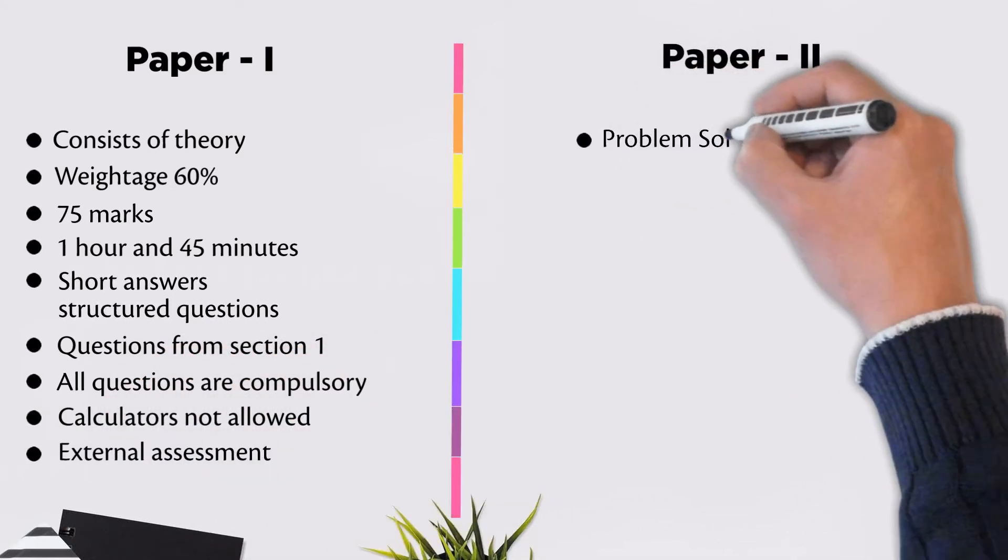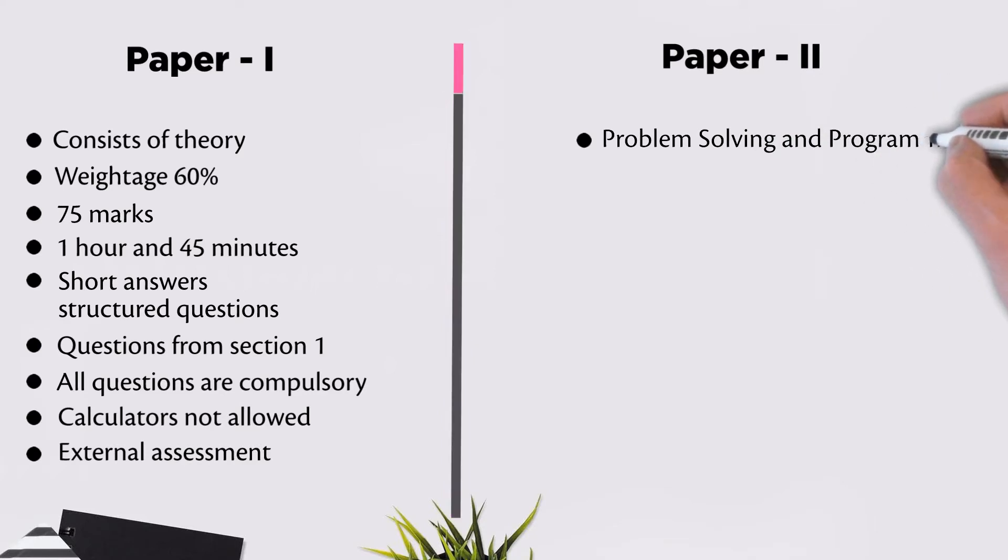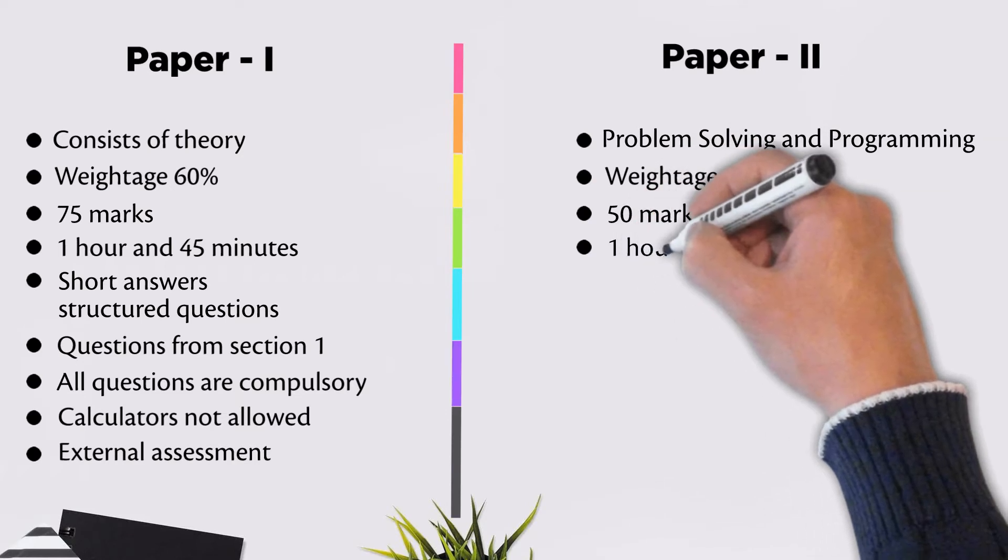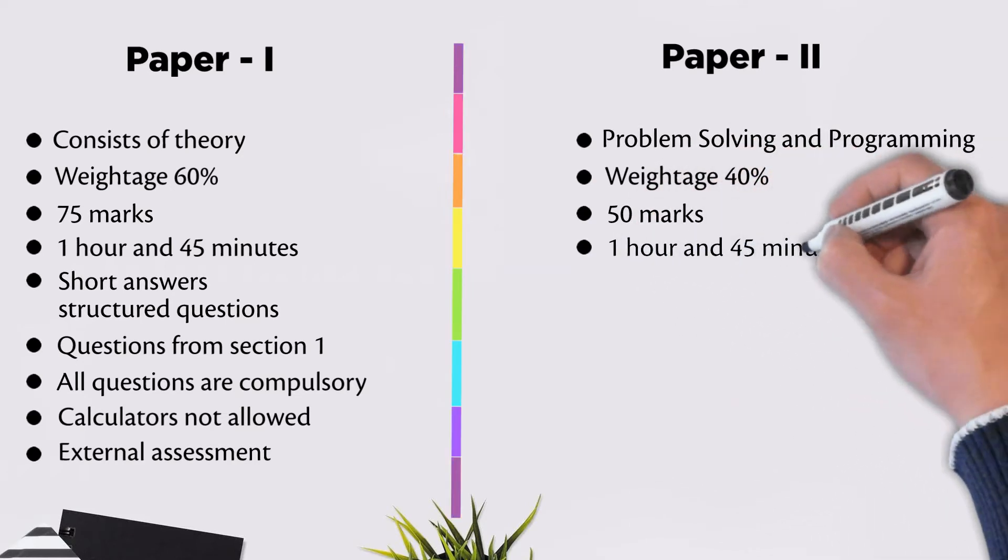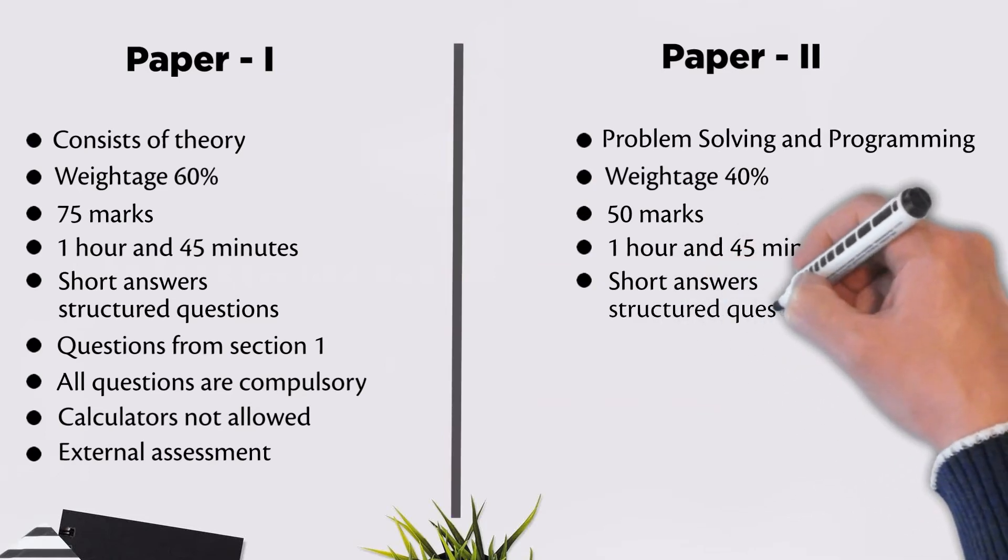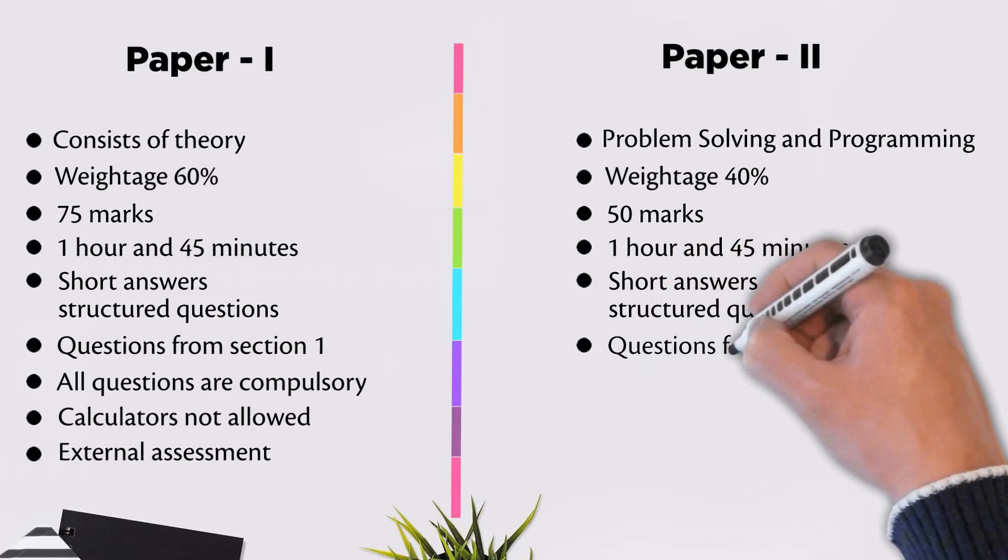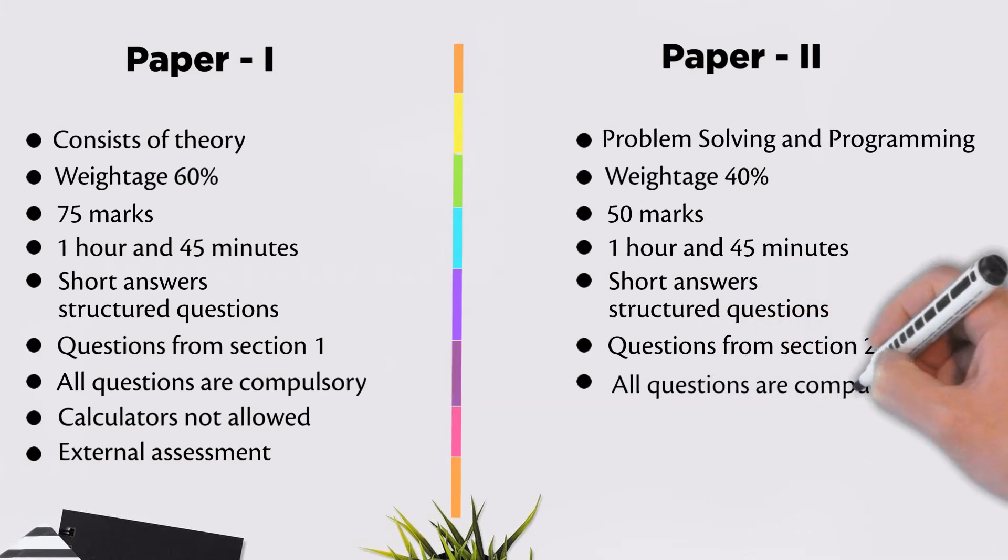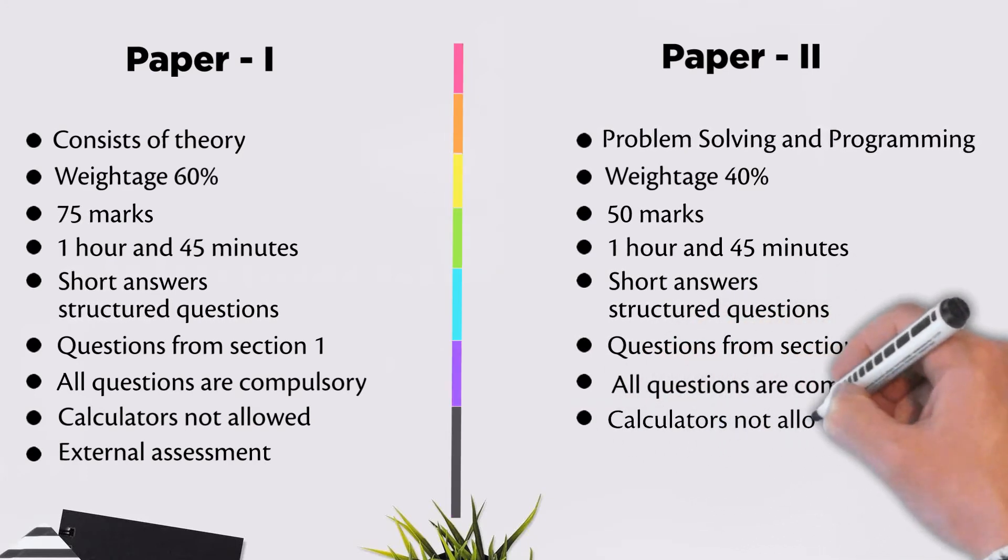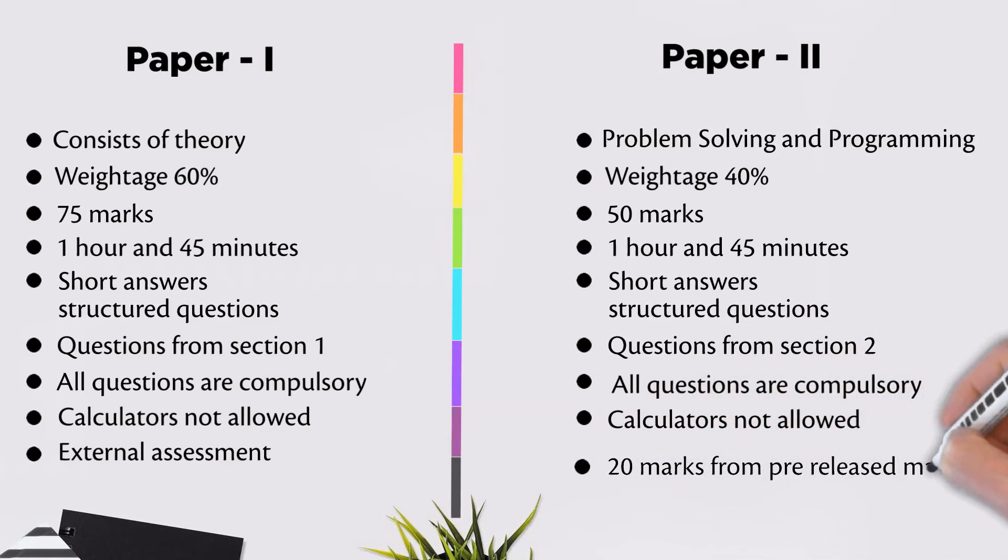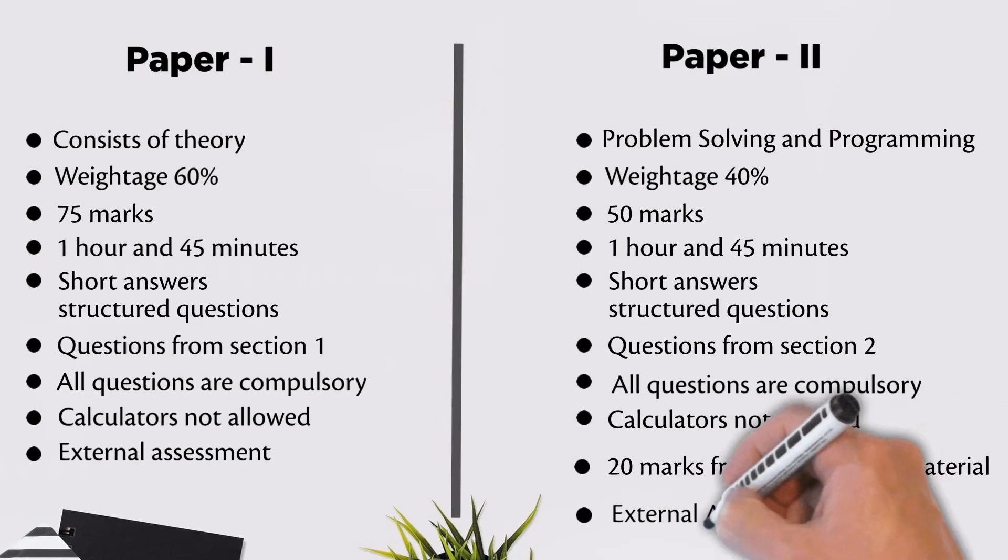Paper 2 consists of problem solving and programming and has a weightage of 40%. There are 50 marks allocated for Paper 2. Time duration is 1 hour and 45 minutes to complete the exam. This paper consists of short answers and structured questions based upon Section 2. All questions are compulsory and calculators are not allowed. 20 marks will be from pre-released material. Exam papers are externally assessed.